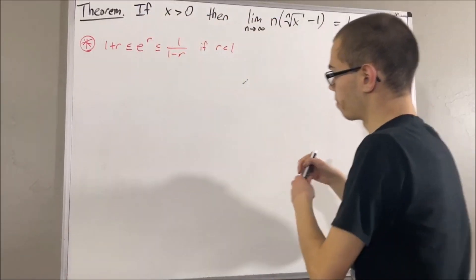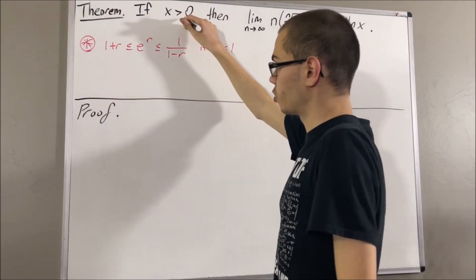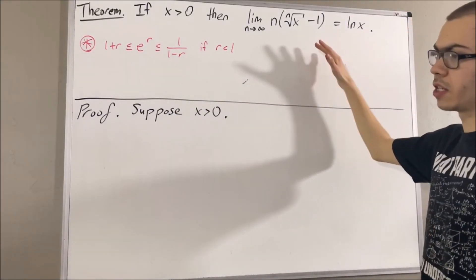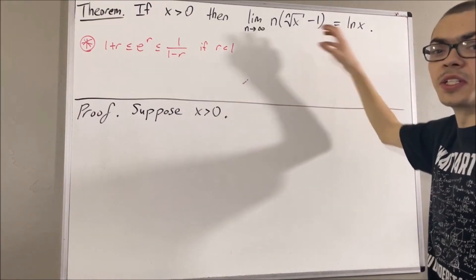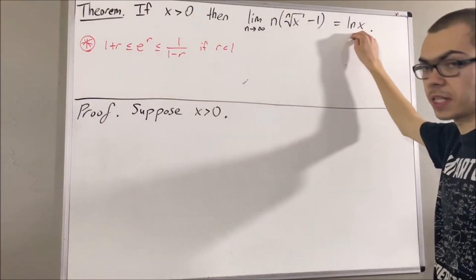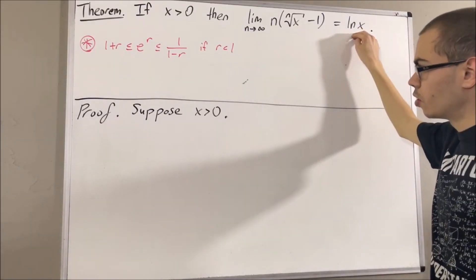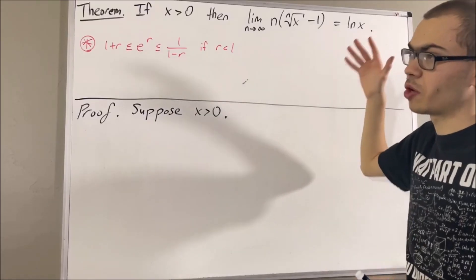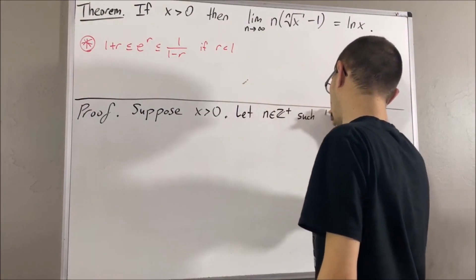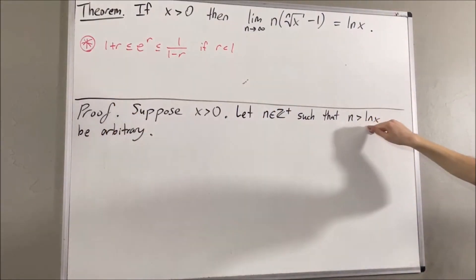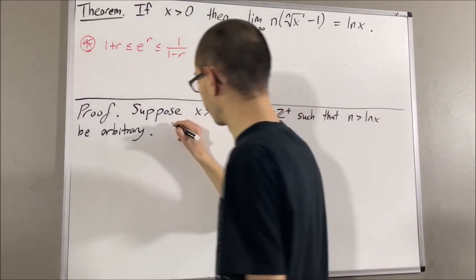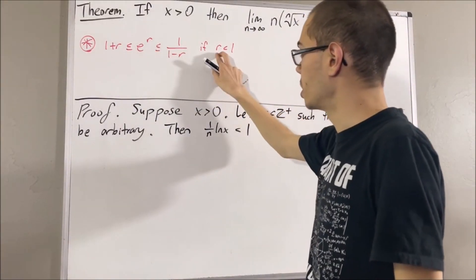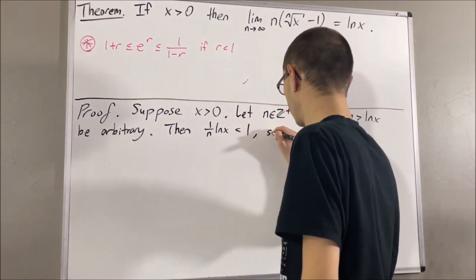Now let's get into proving the theorem. Let's suppose x is greater than 0. The whole goal is to prove that this sequence converges to the natural log of x. To show that, we are going to show that eventually this sequence is squeezed between two sequences that converge to the natural log of x — specifically when n is greater than the natural log of x. So consider an arbitrary positive integer n greater than the natural log of x. If we divide n to the other side, we have 1 over n times the natural log of x is less than 1. In that case, we can apply the inequality, taking r to be 1 over n times the natural log of x.